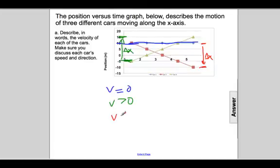Its velocity is less than zero. So again, this is a positive slope, a positive velocity. The red car has a negative slope, a negative velocity. And the blue car has zero slope, a zero velocity.